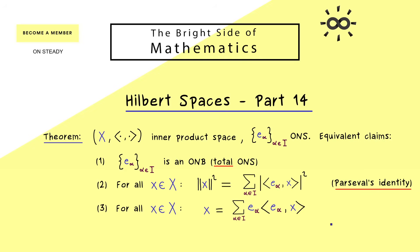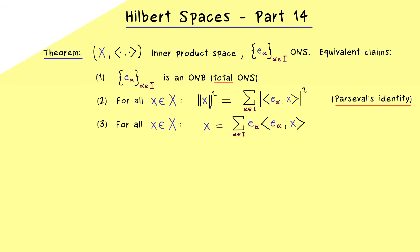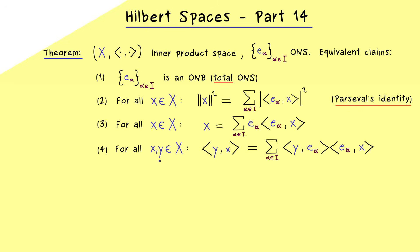If you just look at the finite dimensional case, nothing here is really complicated — it's something we've already discussed in linear algebra. Therefore in this video we just have to consider the infinite dimensional cases. Finally, part 4 says that the inner product can also be represented by such an infinite sum. What we want to prove is that all these claims are equivalent, so with an ONB we can do all these things in calculations.